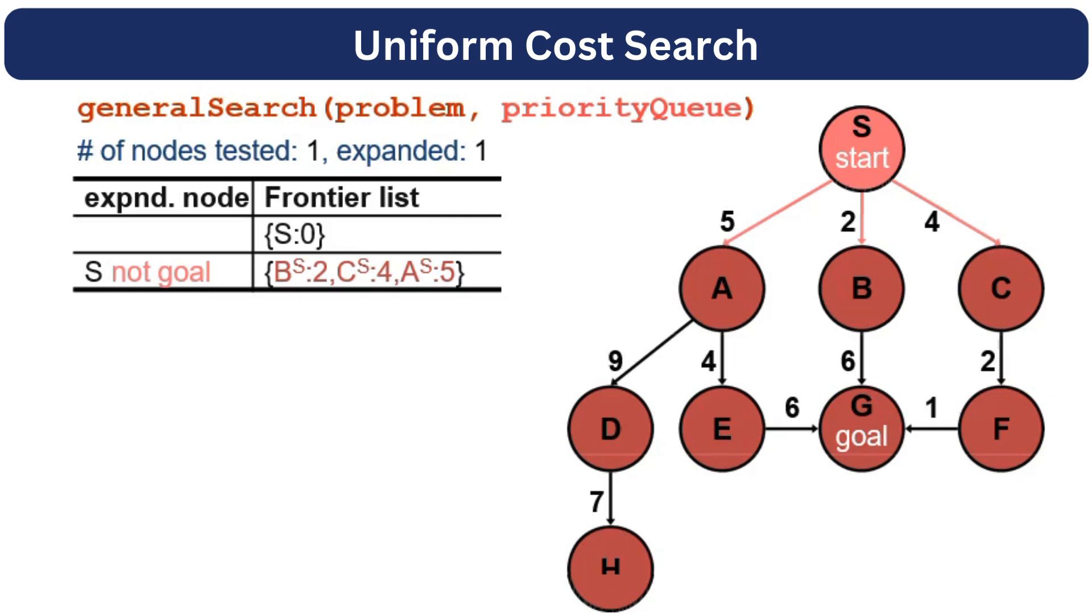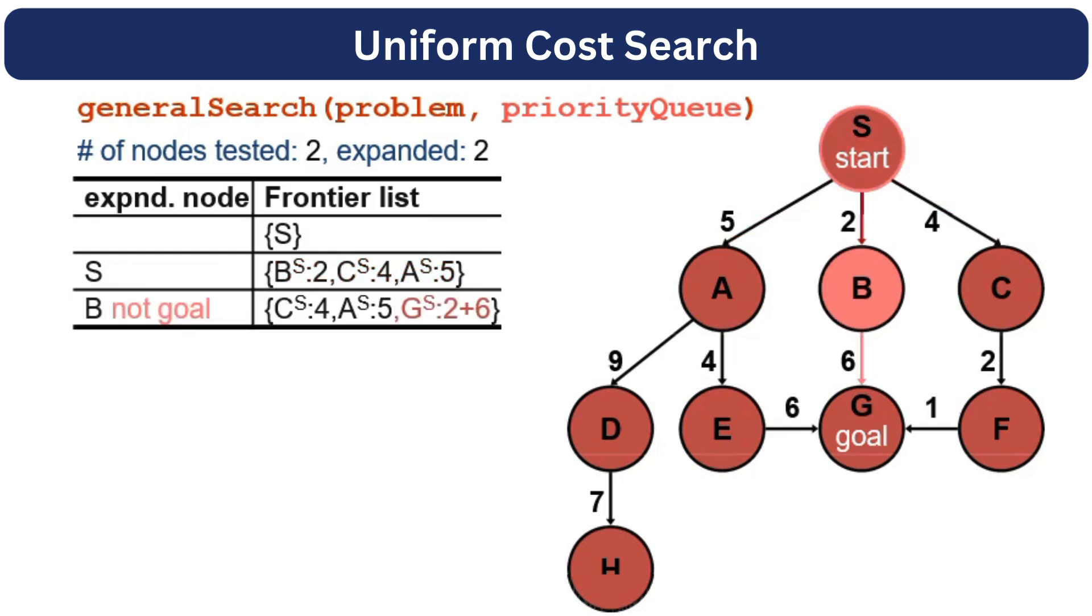So the least cost is B, it will be added first. Then C with the cost 4 and then A with the cost 5. Then we will dequeue the node with the least cost which is B. We will dequeue the B node, we will check if it is a goal node or not. And then we will add its unvisited neighbors to the priority queue.